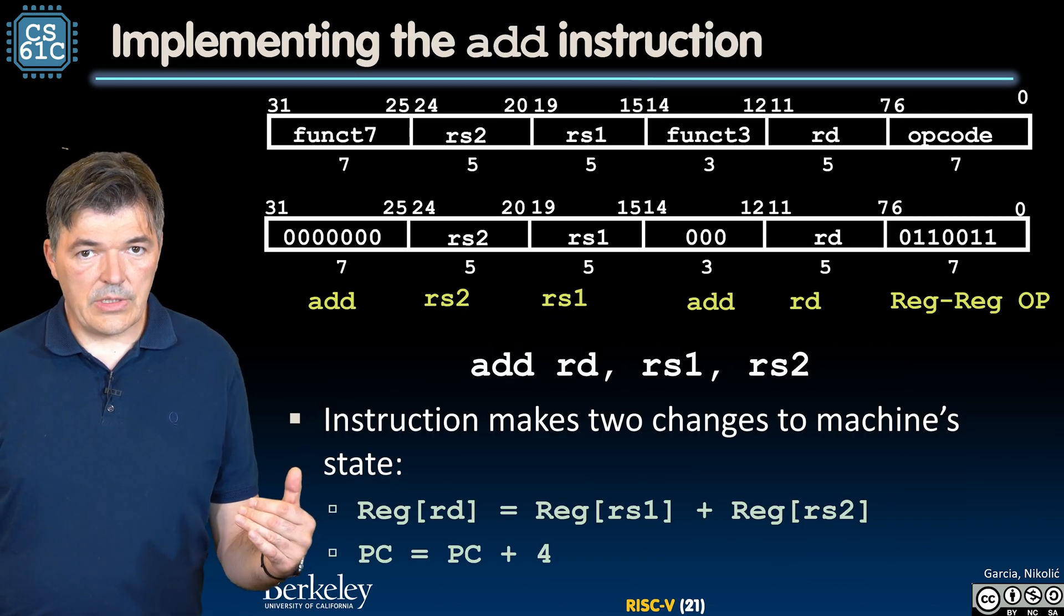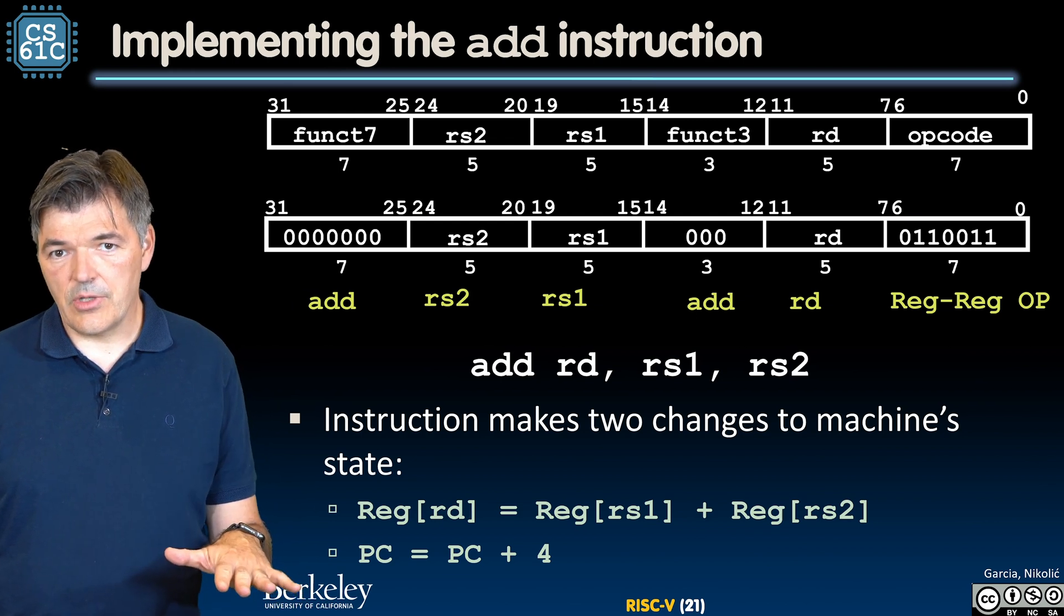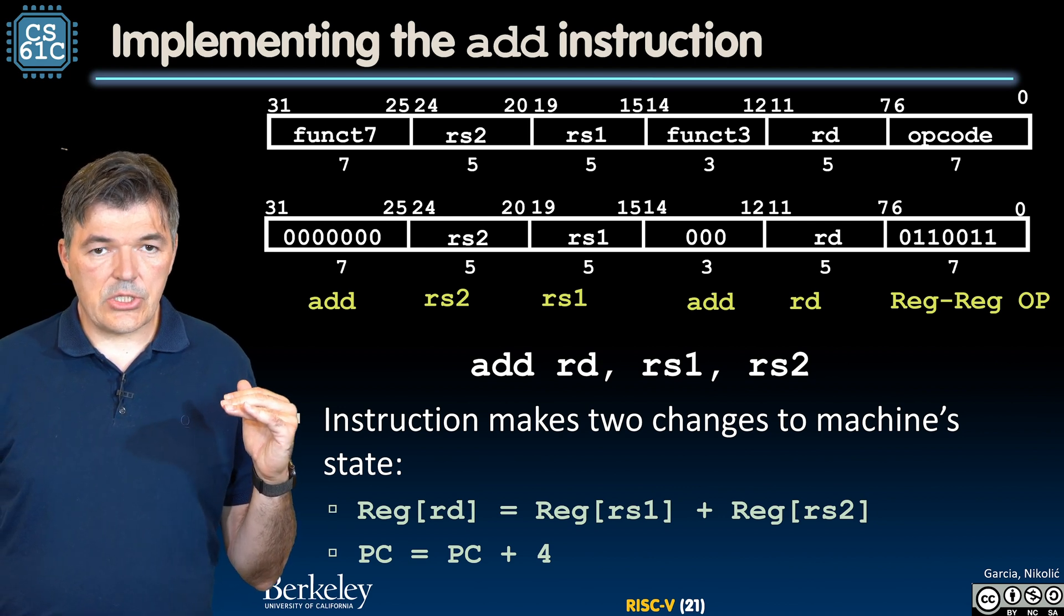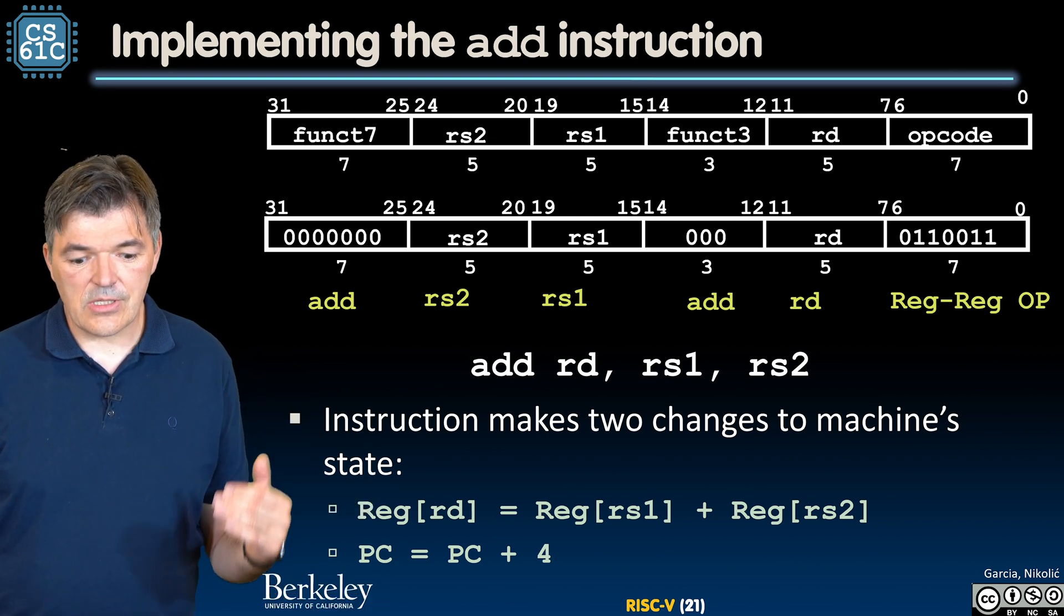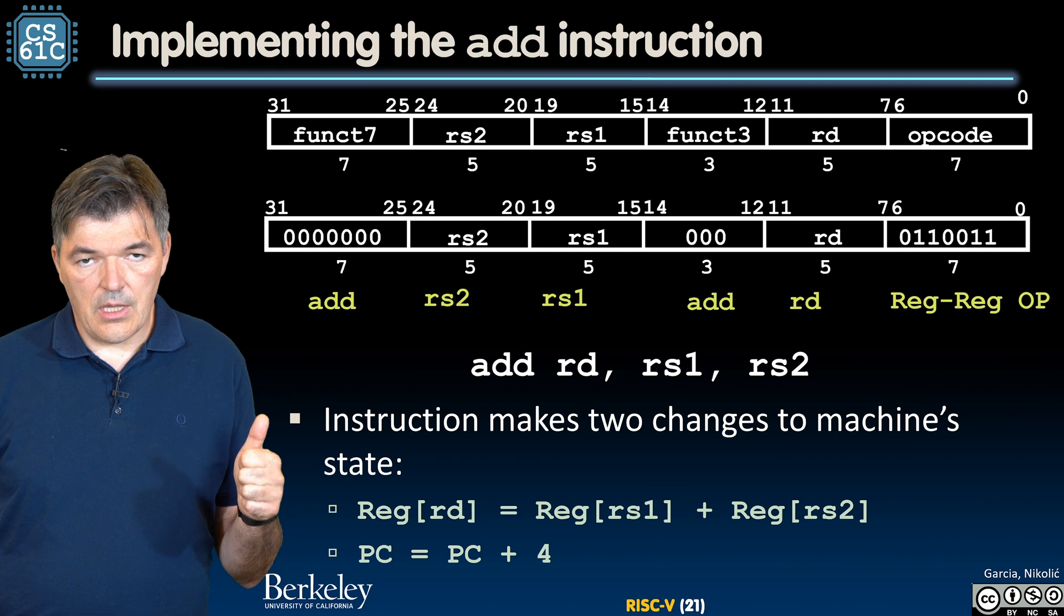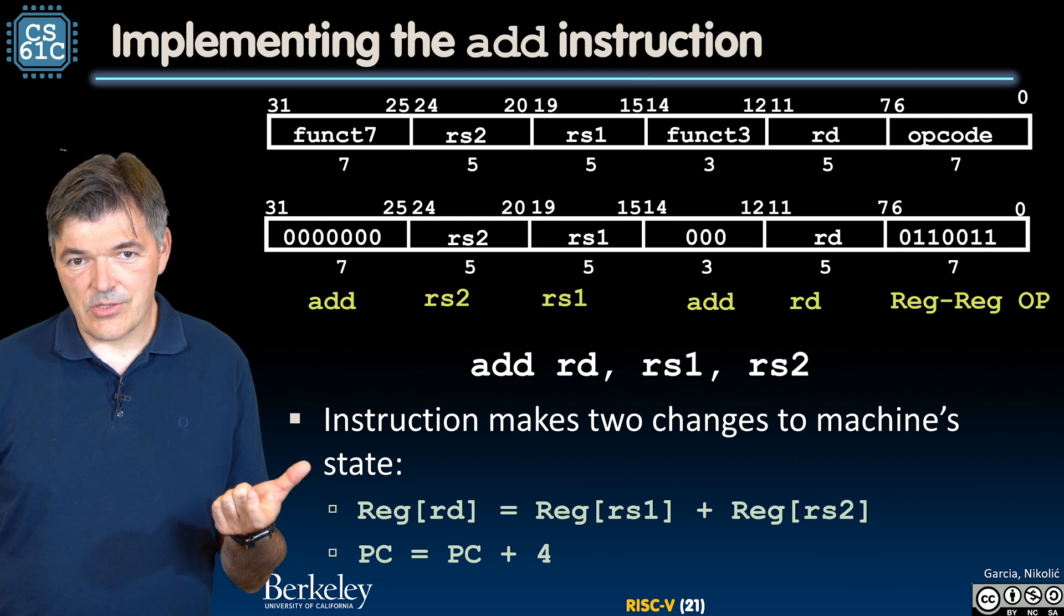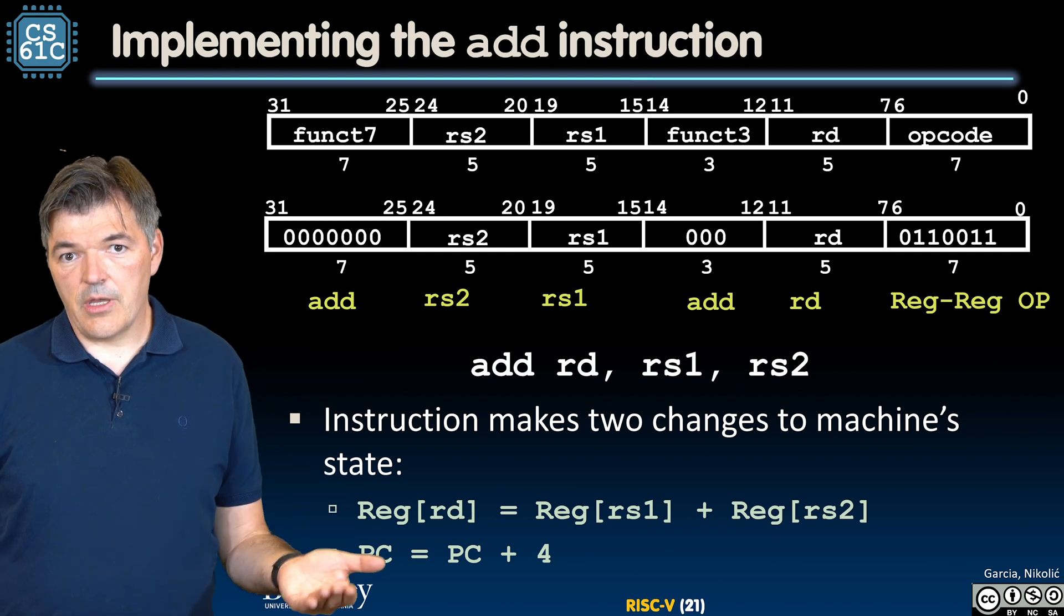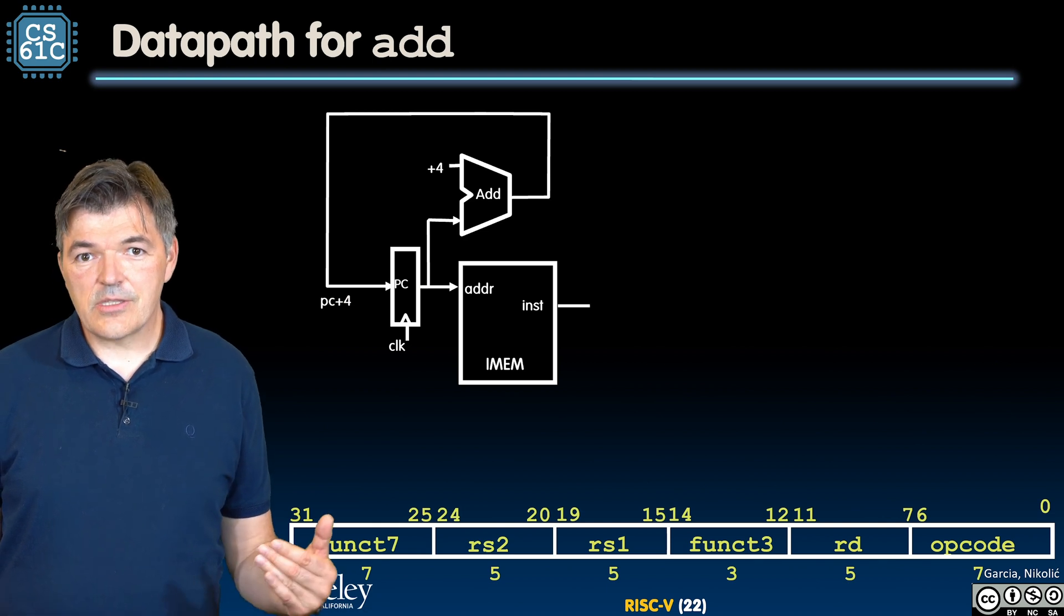The top of this slide just repeats the encoding for convenience, but it helps us illustrate what is the change in state of this state machine that executes instructions. Instruction makes two changes to the machine state. It updates the contents of register rd with the sum of the values of rs1 and rs2 without changing rs1 and rs2, and it updates the program counter to a new value that is 4 bytes larger.